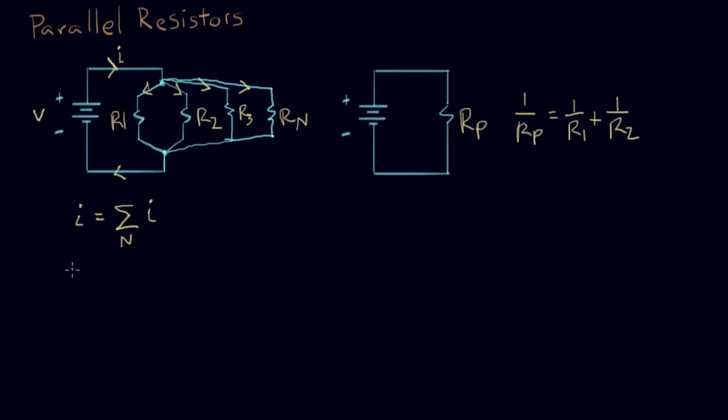And we also know that the current in each individual resistor, In, is equal to one over that resistor times V, and V is the same for every one of them. So now we substitute this equation into here for I.